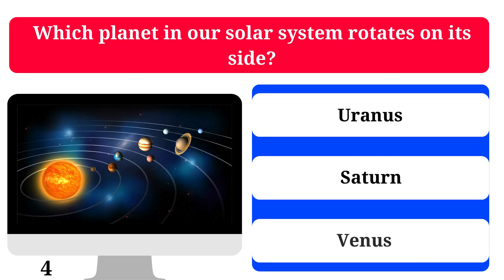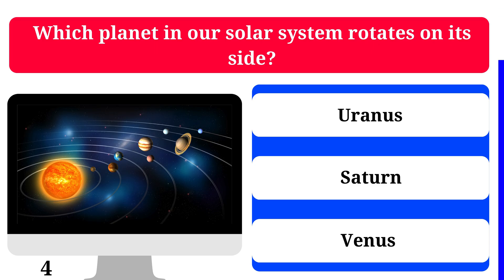Which planet in our solar system rotates on its side? Uranus, Saturn, or Venus? The correct answer is Uranus.